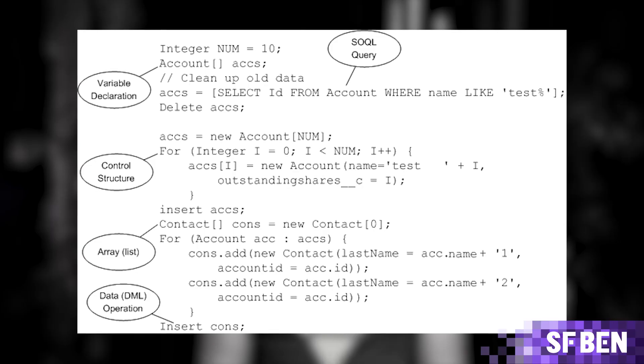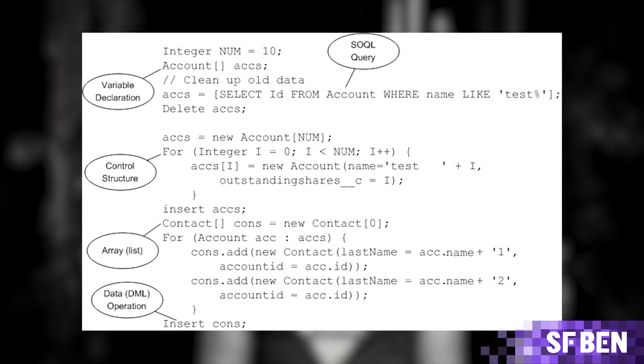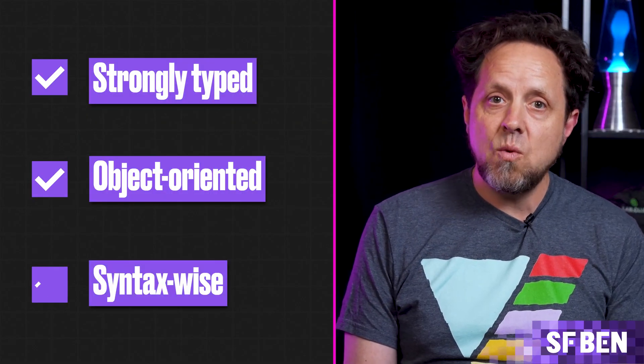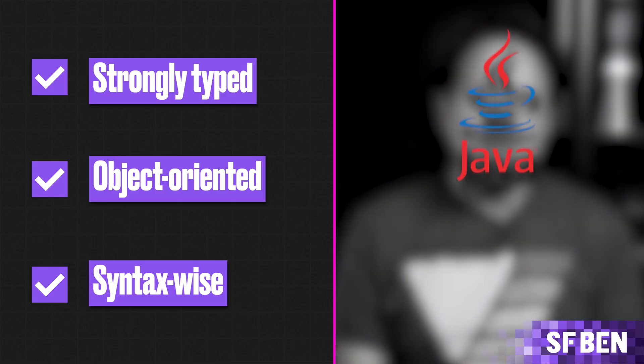Apex is a proprietary language developed by Salesforce. It's strongly typed, object-oriented, and syntax-wise it looks a lot like Java and C-sharp. It was designed to be familiar to traditional programmers while integrating tightly with the Salesforce platform. Apex is what's used to create custom functionality beyond what declarative tools like Flow can offer, and understanding it gets you one step closer to getting the most out of these tools.